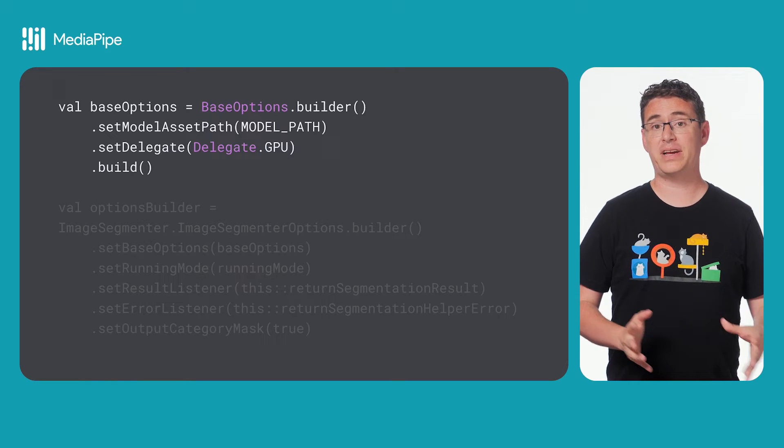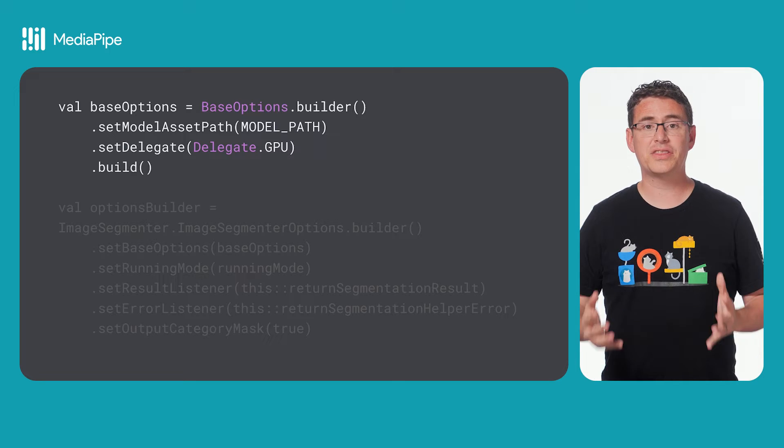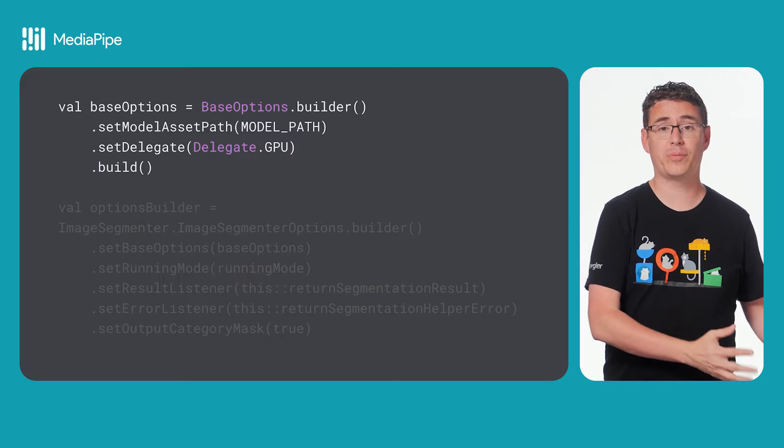In this case, you'll create a base options object with the model that you want to use, as well as, optionally, set the device hardware that you want to use for performing inference.